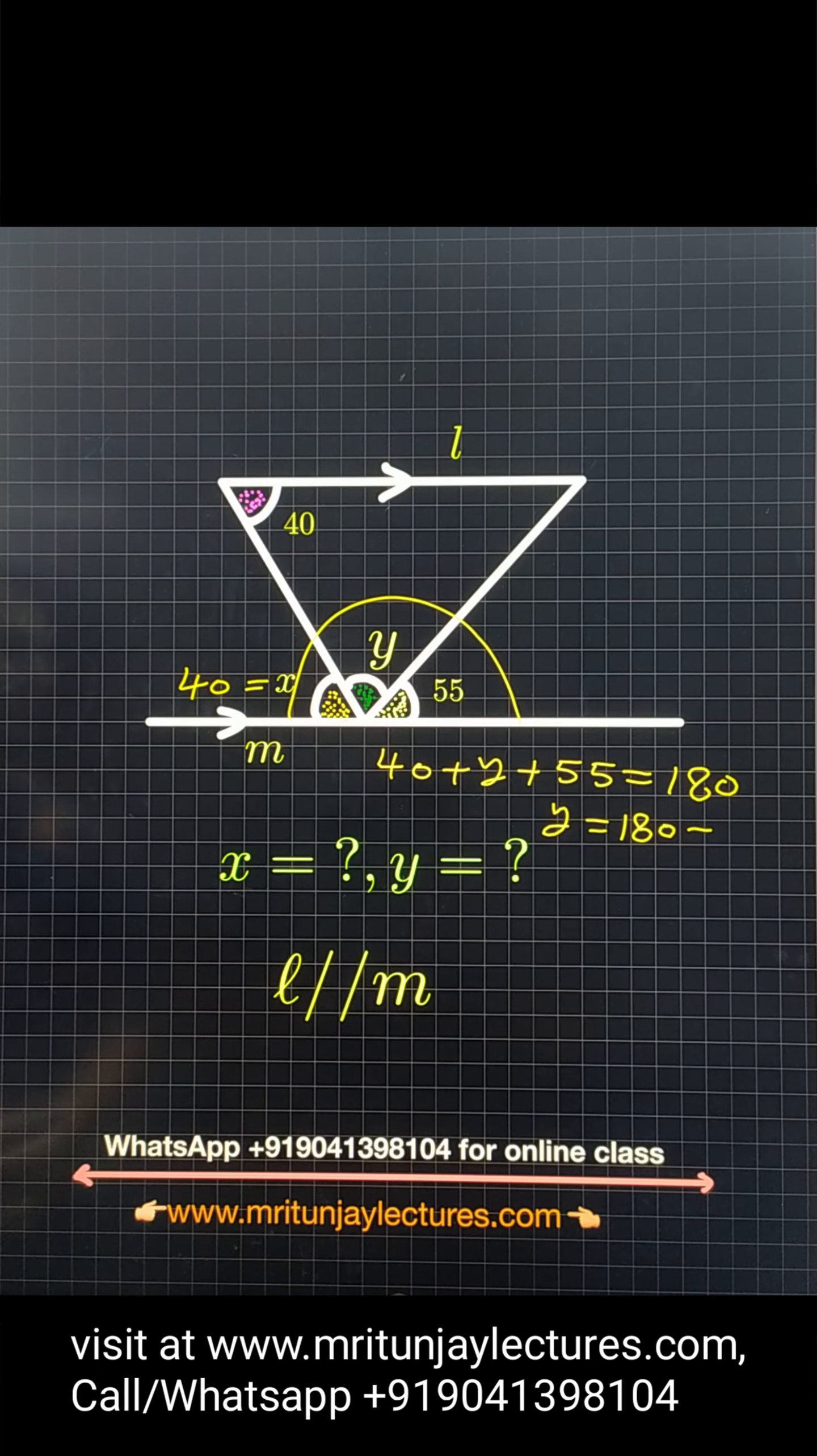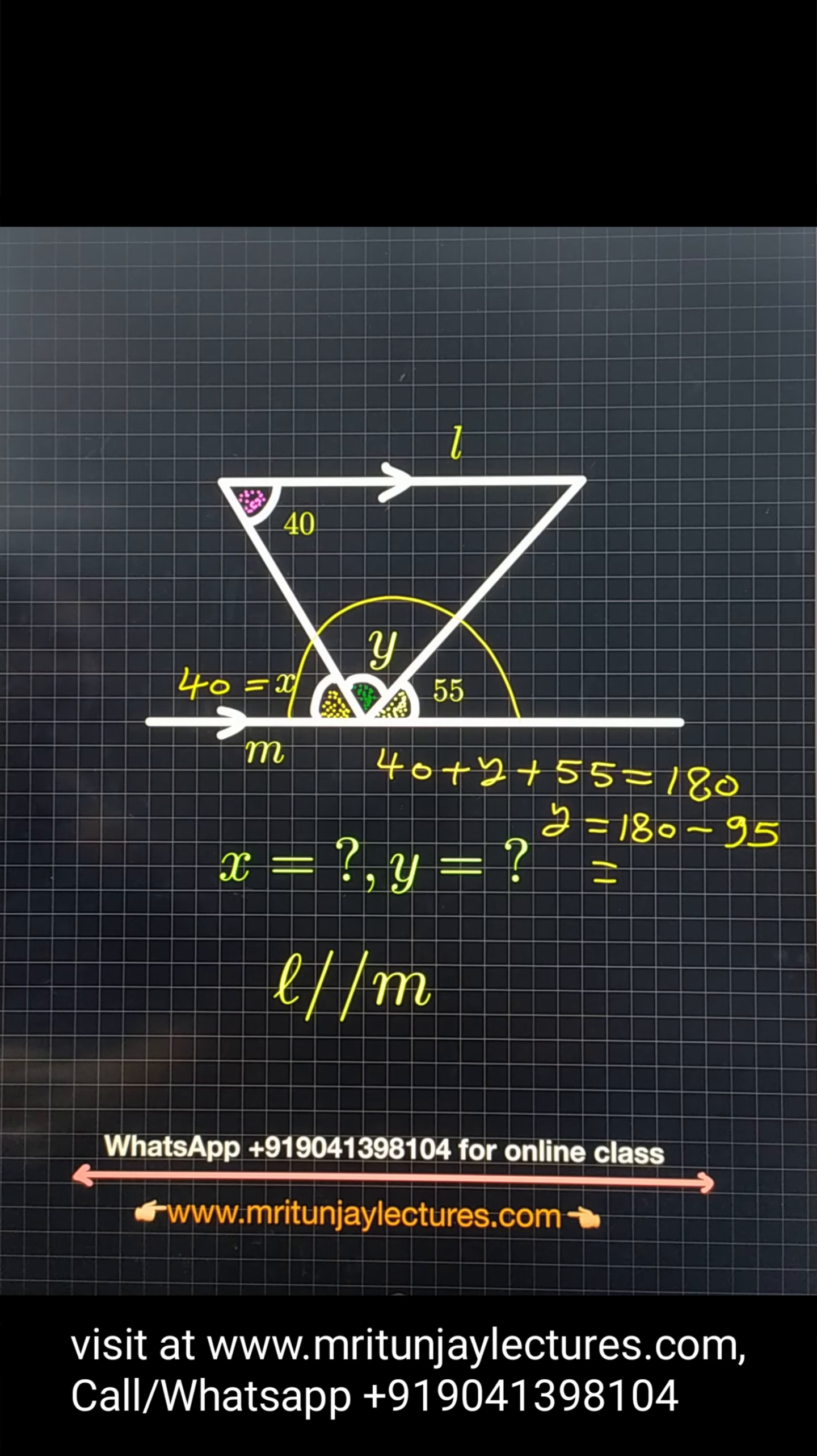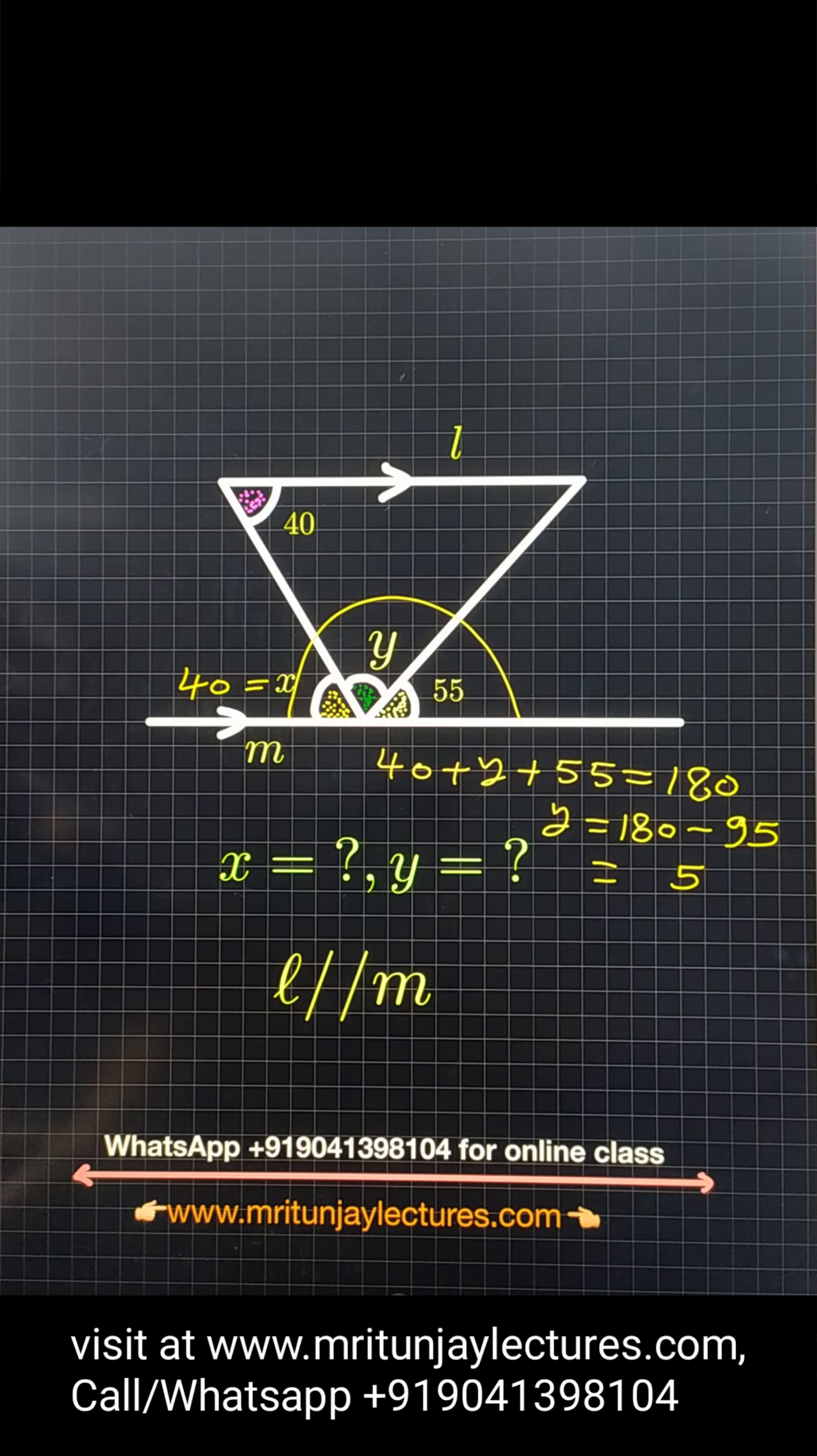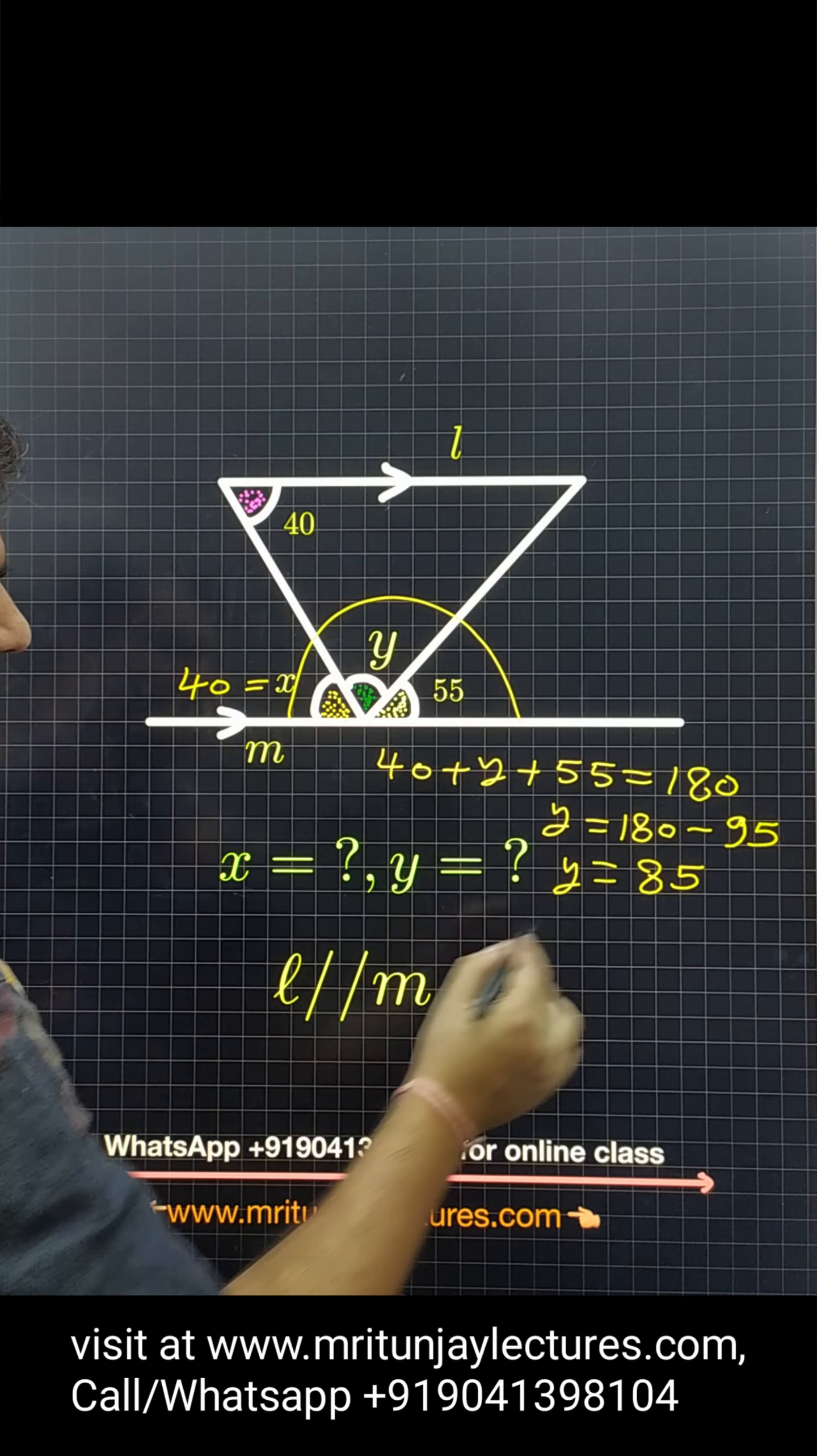40 plus 55, 95. Basically minus 95. y is equal to 180 minus 95. After that, this one is 5 here, 17 minus 9, that is how much? 8. So 85. So y is how much? 85 degrees.